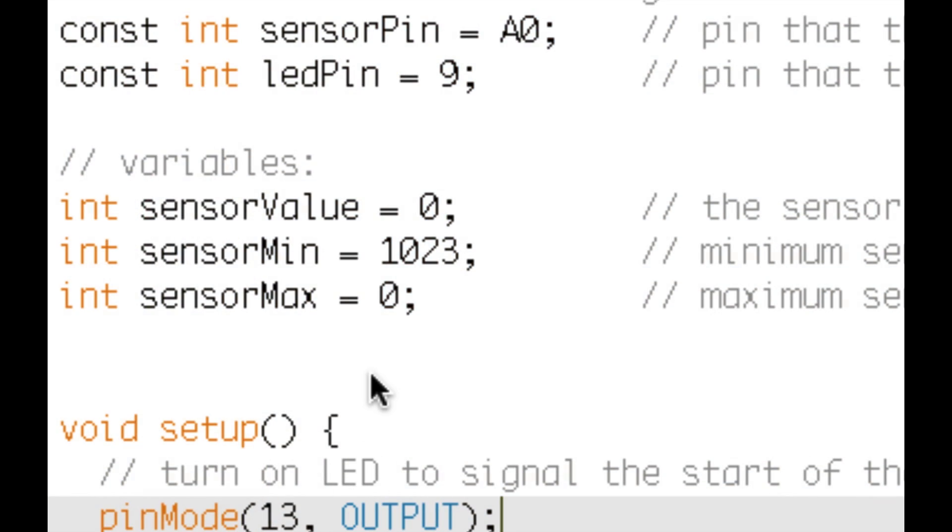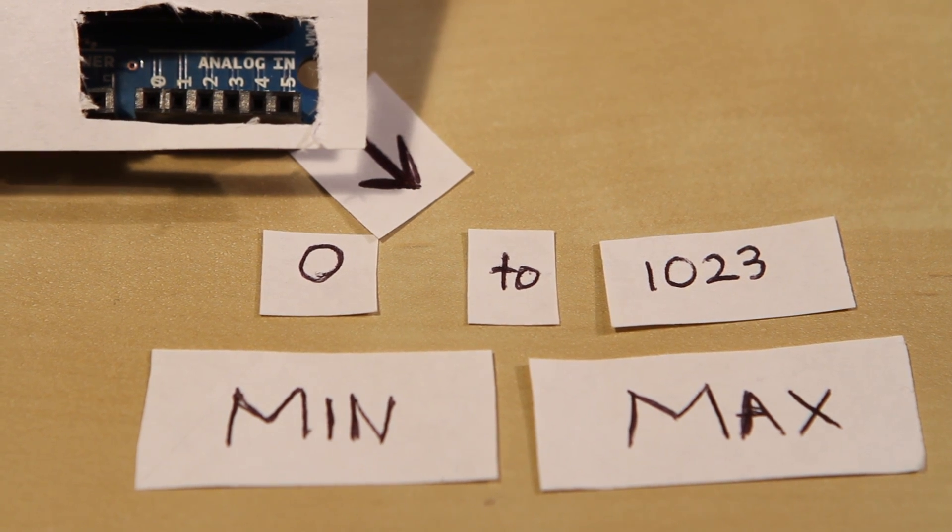Here's a few things to notice about the code. The minimum and maximum possible values are first set to a default value. You might recognize these default values - it's the minimum and maximum value that the analog in gives you.